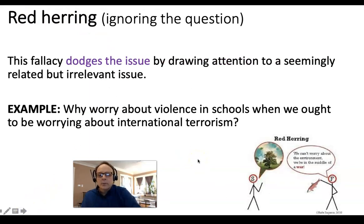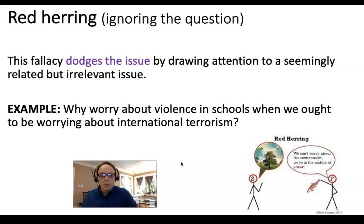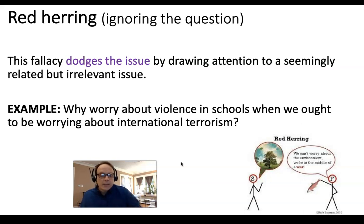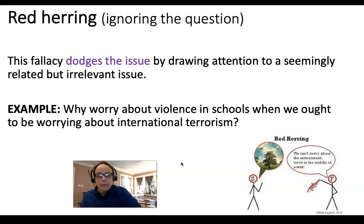A red herring is when you want people to ignore the real problem — it dodges the issue by drawing attention to something that seems related but is really irrelevant. If you can get someone to focus on this other thing, they won't think about what's most important. White House press secretaries, for example, are often very good at using red herrings — when a question is difficult, they deflect and shift to something else entirely rather than answering directly.